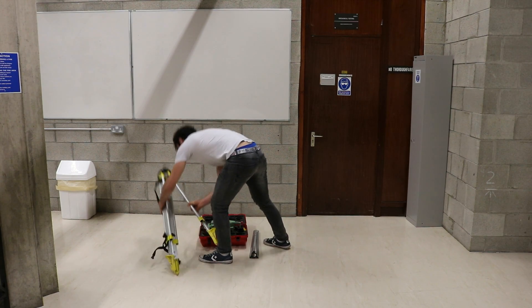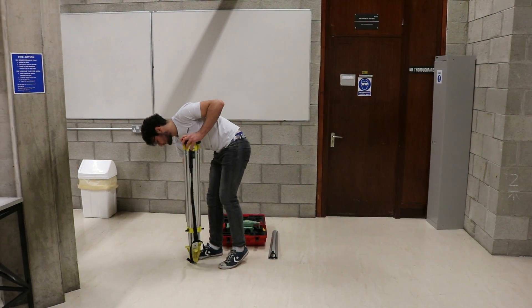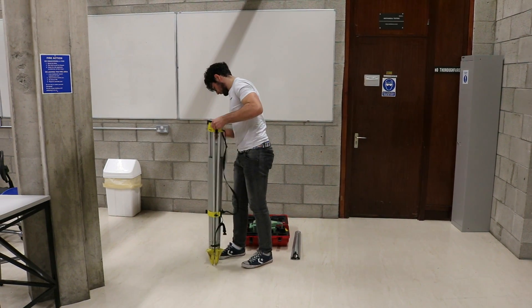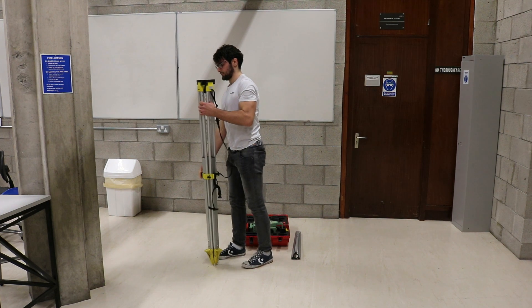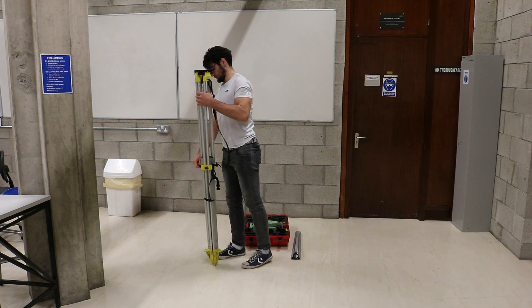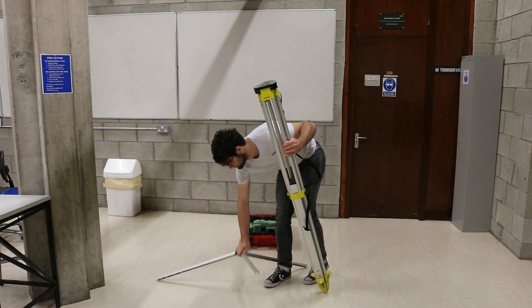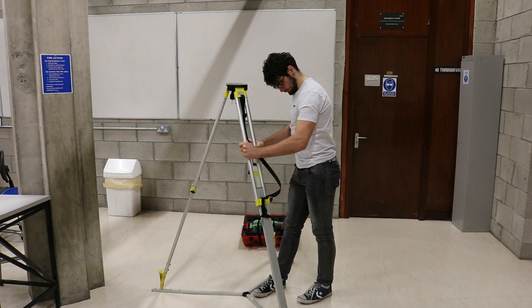To set up the total station, you must first extend the legs of the tripod to a height that will allow the user to comfortably use the total station and spread the legs out so the tripod is stable and will not move during the exercise. You will notice that for this example I have used a tripod star to ensure that the legs of the tripod are stable.